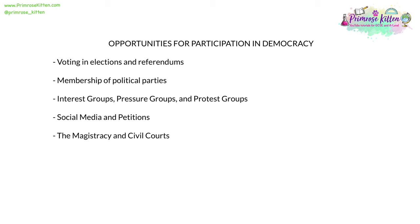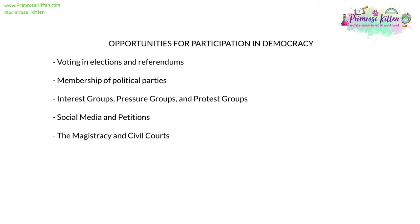There are many opportunities for citizens to participate in democracy, such as voting, elections and referendums, membership of political parties, joining interest groups, pressure groups and protest groups, the use of social media and petitions, and the magistracy and civil courts. There are also barriers to the effective participation of citizens in democracy, such as age — many things require you to be 18 or over — time and money limitations, being a member of a political party, an interest group or a pressure group can require a subscription, which may not be affordable, and extensive time involvement which may not be practical. Other barriers include apathy and indifference, not knowing or not caring what is happening, misinformation and fake or biased news.